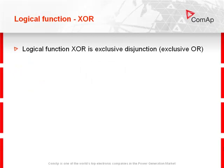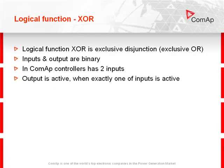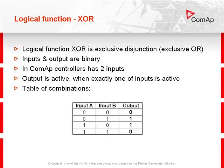Logical function XOR is exclusive disjunction, or exclusive OR. Inputs and outputs are binary. In COMAP controllers it has 2 inputs. Output is active when exactly one of the inputs is active. In the table of combinations you can see that exactly one active input causes an active output.